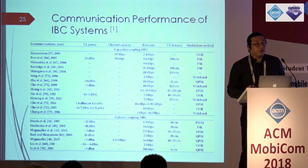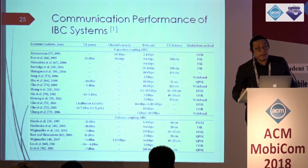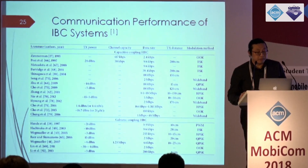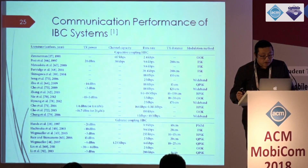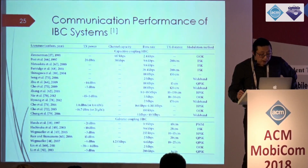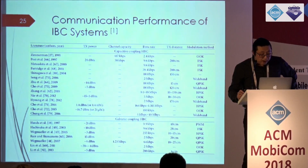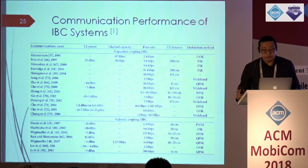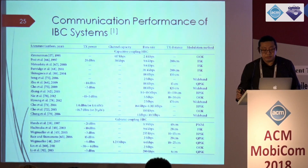A comparison table of research work examining the performance of different in-body communication implementations from 1995 to 2013 shows that for galvanic coupling, recent research supports up to 2 Mbps, while capacitive coupling can support even higher throughput — up to 10 Mbps — using different modulation methods and within closer transmission distances.